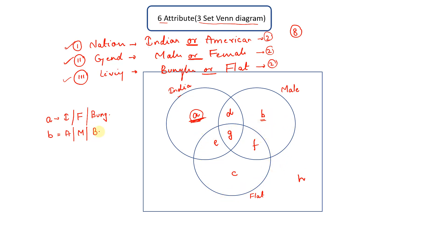So similarly for any of the regions you can easily find it out. So let's suppose I need to find for g. What does g belong to? G belongs to person, it's a Indian, male, and flat: Indian, male, and flat.